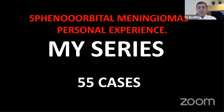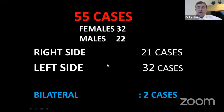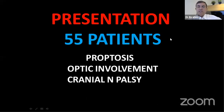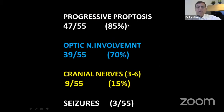My personal series: 55 cases over 1990 to 2020. Females outnumber males, as expected. More cases were on the left side, and I had bilateral tumors in two cases. Presentation: proptosis in 47 of 55 (85%), optic nerve involvement in 70%, cranial nerve deficit in 15%, seizures in 3 of 55.